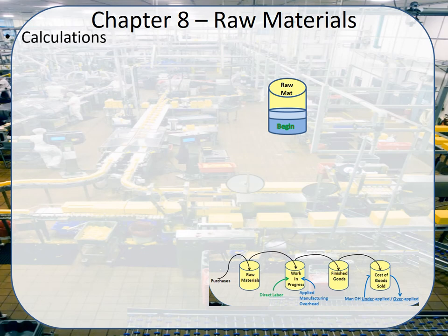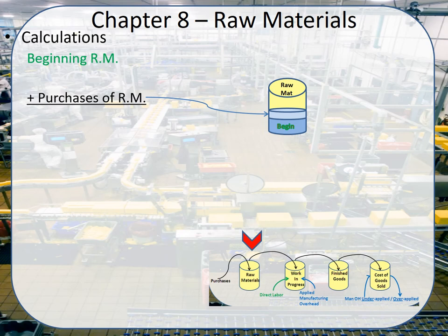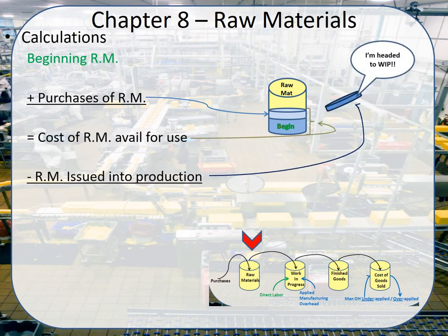For raw materials, we begin with however much we had at the beginning and we buy some more. During the year we start to use those raw materials — everything that's used will go from raw materials into work in process — and then we end up with our ending raw materials, or direct materials. Those are synonymous terms at the end of the period.